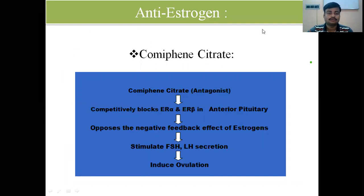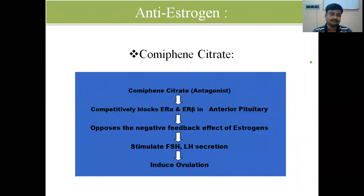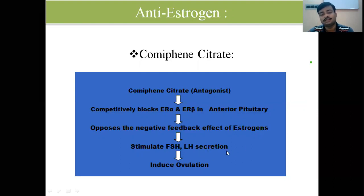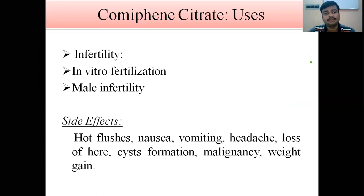Several antiestrogen drugs are available. One of the prime drugs is clomiphene citrate. It is an antagonist that competitively blocks estrogen receptor alpha and beta in the anterior pituitary, opposing the negative feedback effect of estrogen. This stimulates FSH and LH secretion and induces ovulation. Clomiphene citrate is mainly used in cases of infertility, in vitro fertilization, and it also increases sperm count and density in male infertility.